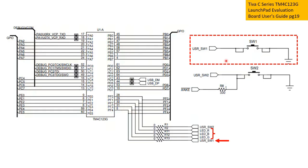The user switch SW1, which is the one I'll be using, is connected to PF4 — that is Port F bit 4. User switch SW2, USR_SW2, is connected to PF0.